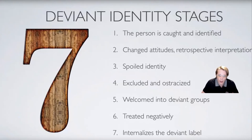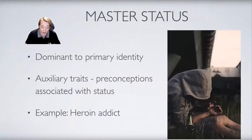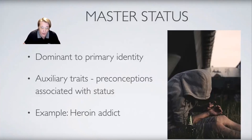Recall from Social 101 that a master status is one that defines our primary identity — the status most dominant about a person. Some statuses are more relative to the situation you're in, but the master status tends to form the key identity across contexts. Hughes explains that auxiliary traits are preconceptions that people associate with the master status, filling in the blanks to create a deviant image. For example, a heroin addict may be the master status, and the idea that they are thieves who steal to get money for their fix is an auxiliary trait that paints the picture of the deviant identity.